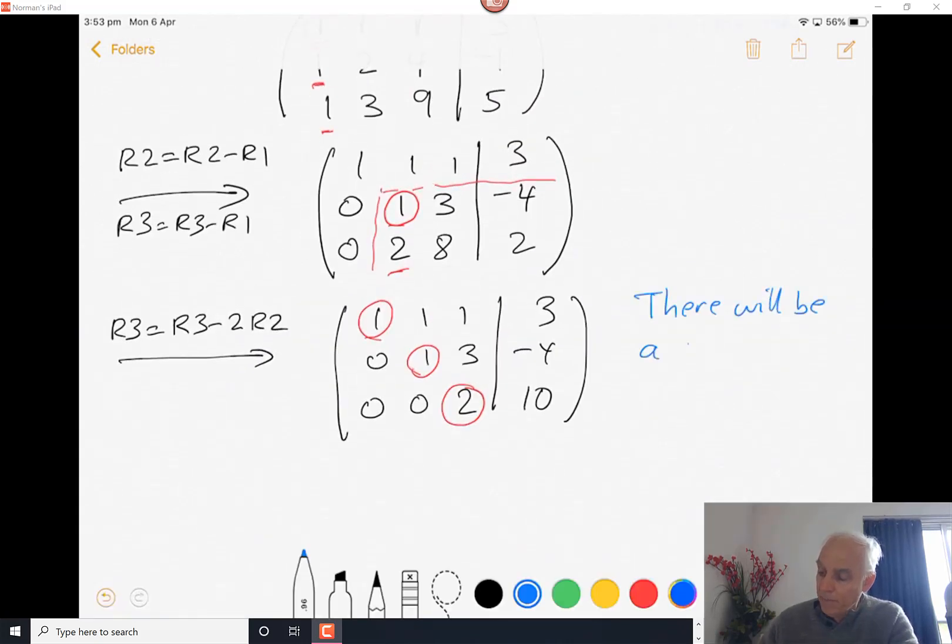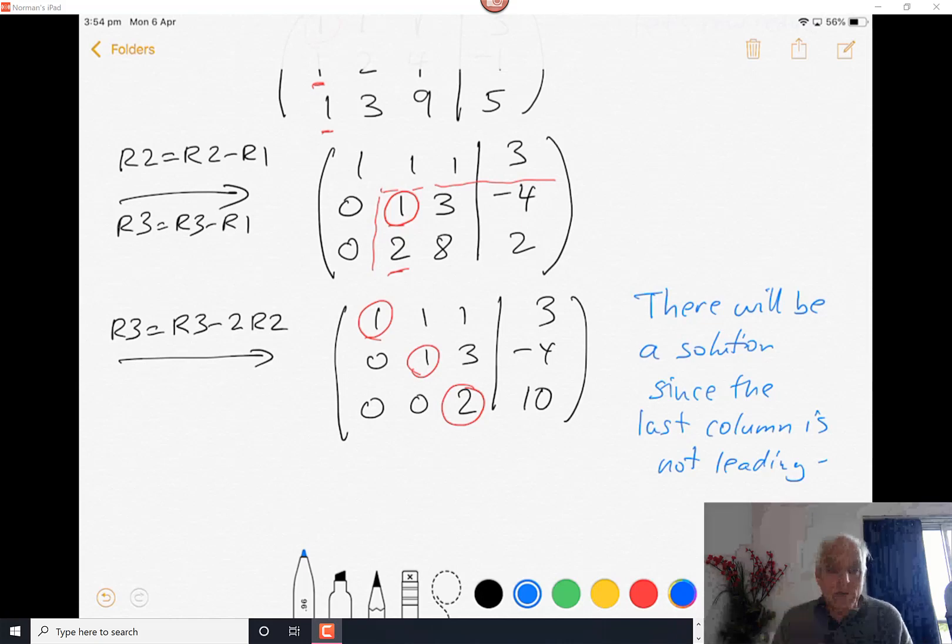We know that because the last column is not leading. And how many parameters are there going to be in the solution? The parameters correspond to the non-leading columns on the left-hand side. There are no non-leading columns on the left-hand side. Zero parameters means that there's going to be a unique solution. We can anticipate that already at this stage. There's going to be a unique solution, which is good because that'll give us a unique quadratic function that goes through the three points.